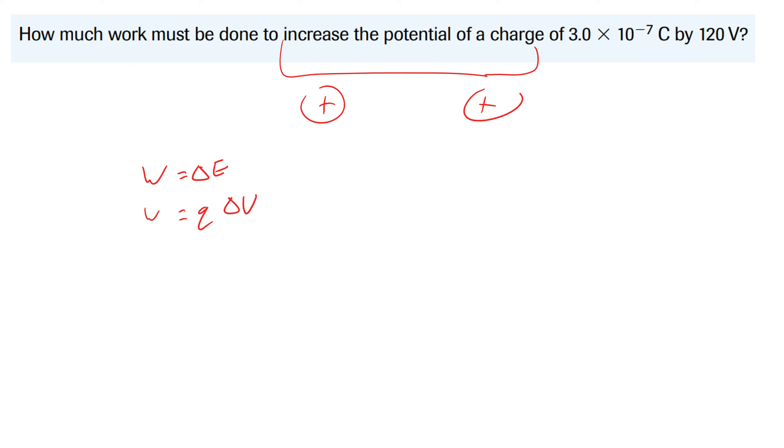So we're told in this case that our Q is 3 times 10 to the negative 7, and our voltage is 120, which is giving us here a value of 3.6 times 10 to the negative 5 joules.